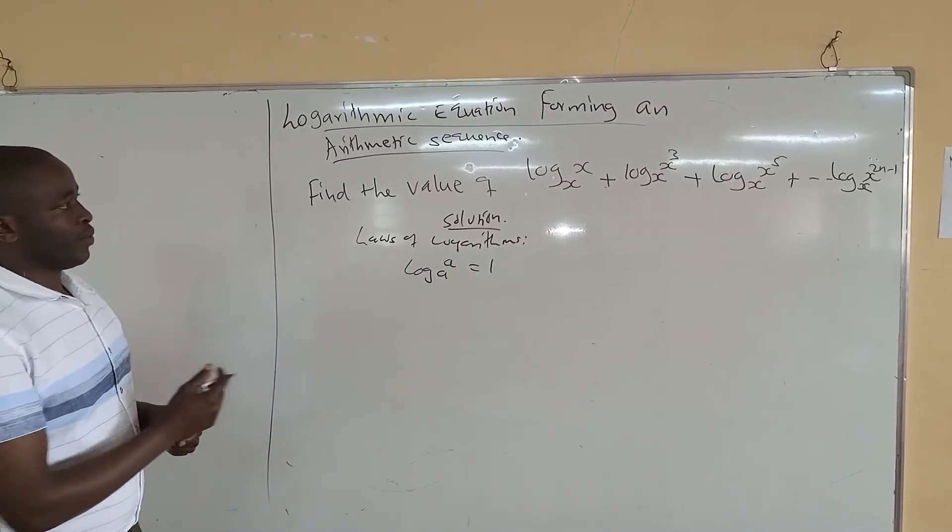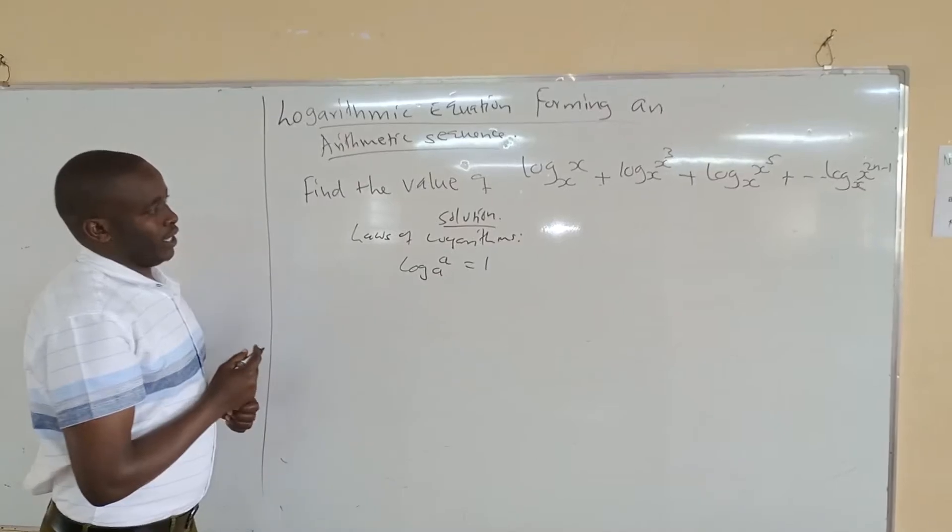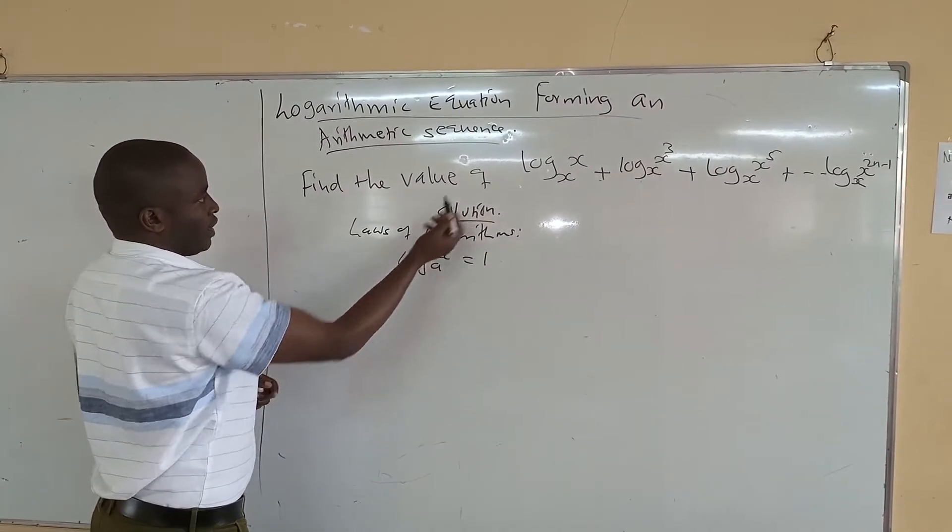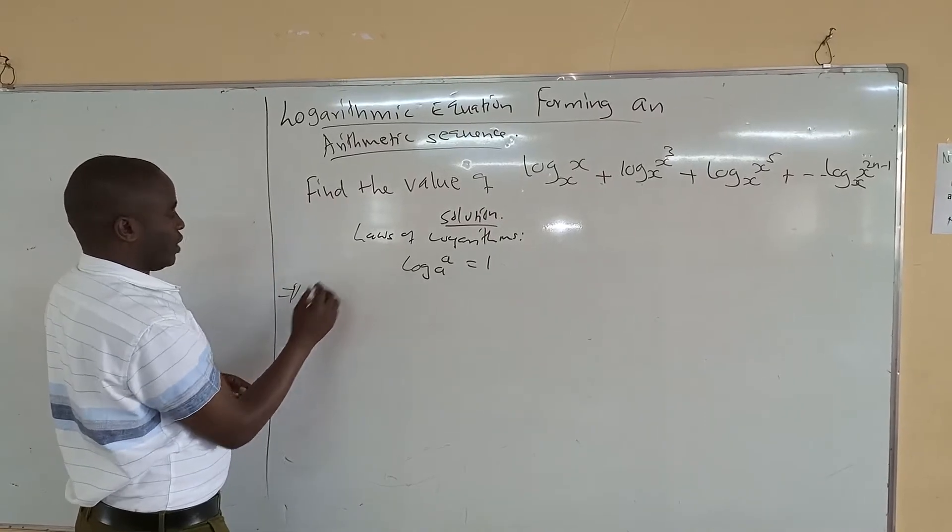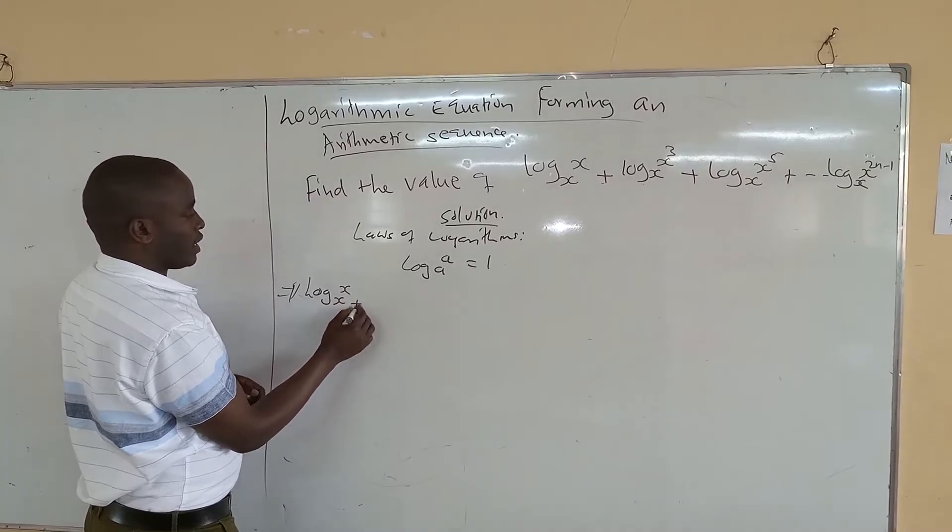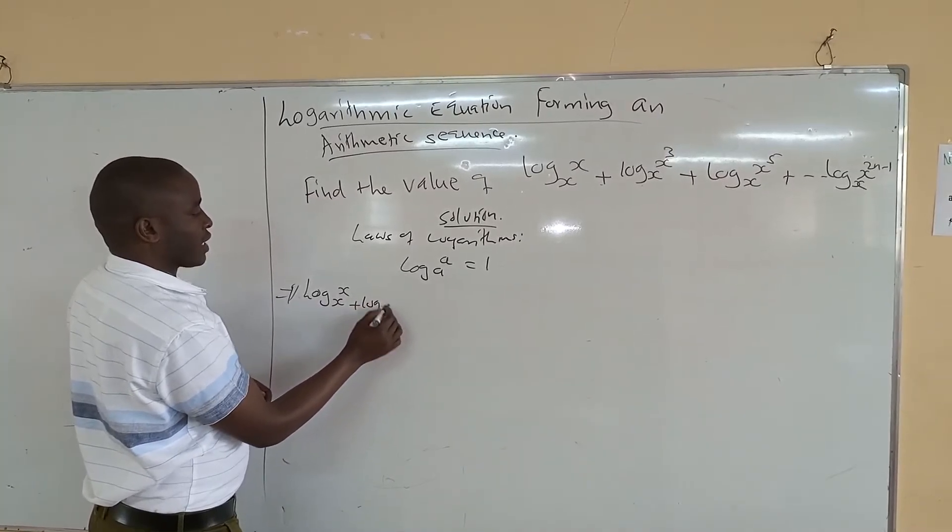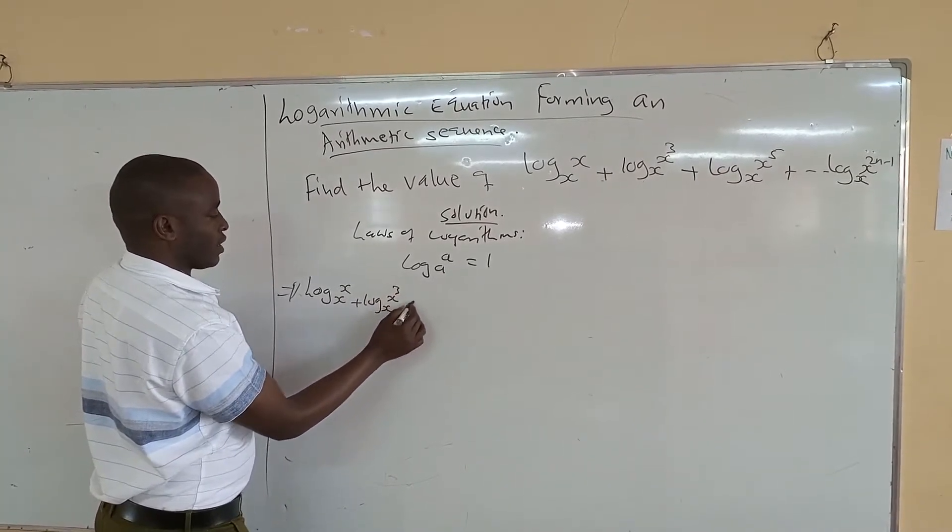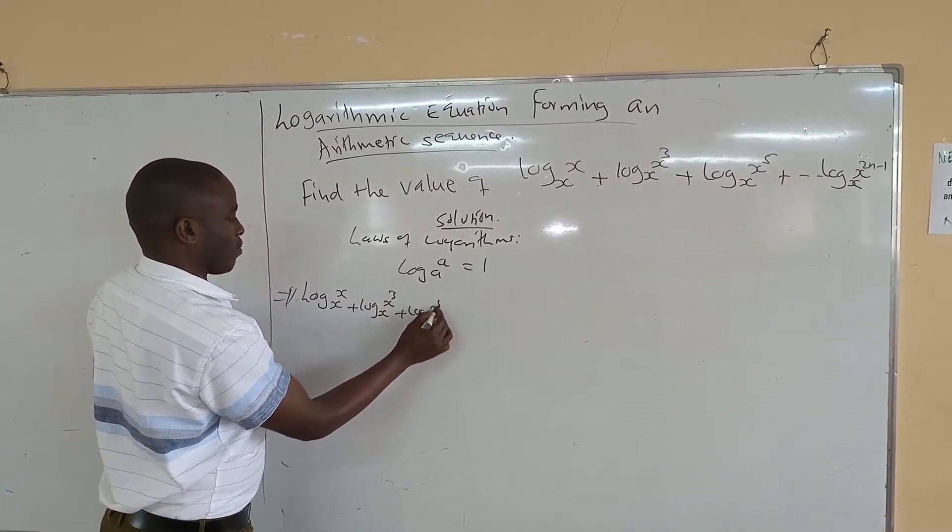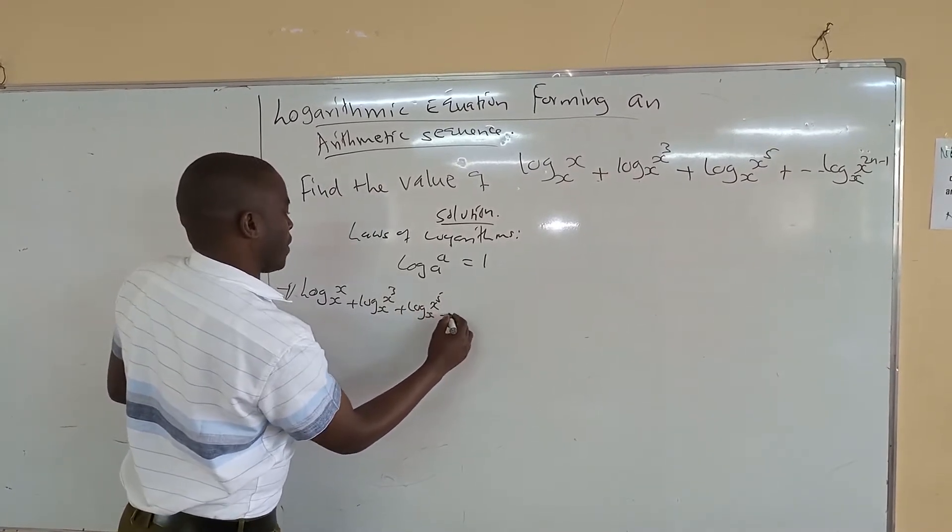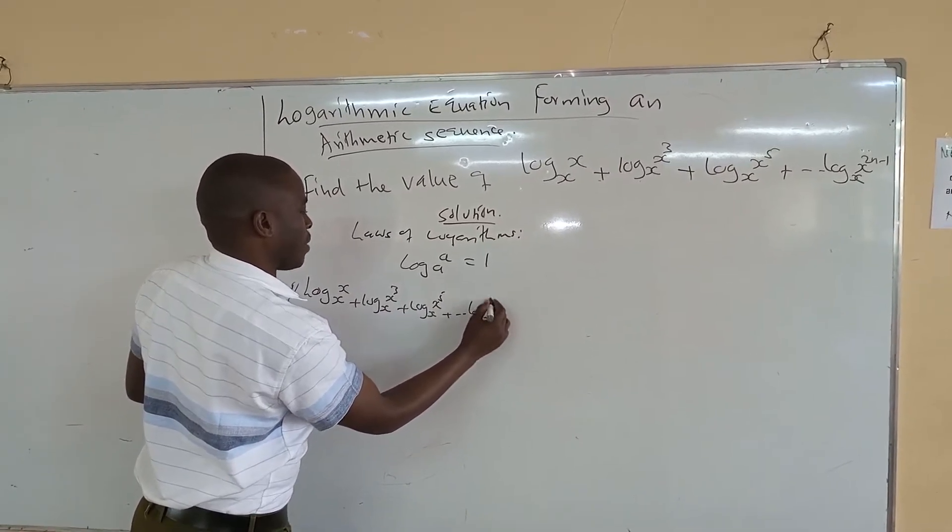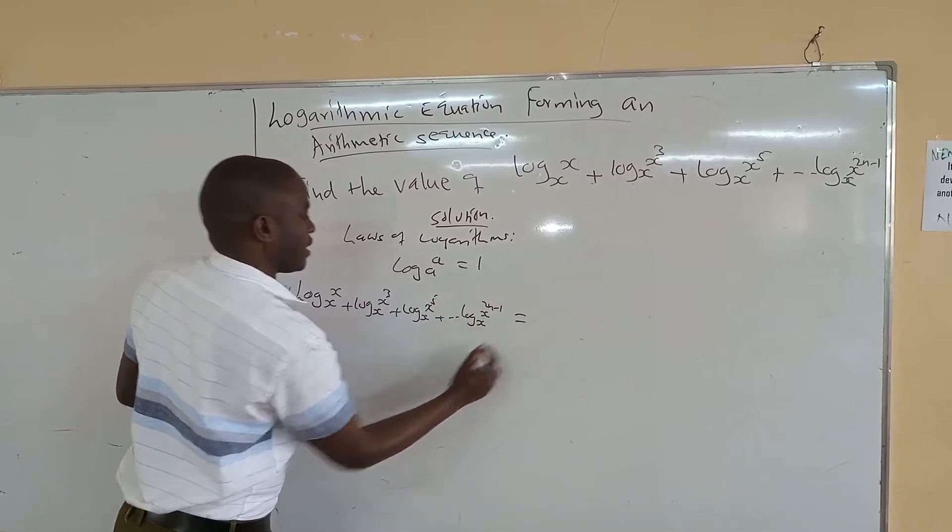When you know that, you now go to the equation and try to use this log law. So if we rewrite that equation, it becomes log x x plus log x x cubed plus log x x power 5 plus log x x power 2n minus 1 is the same as.